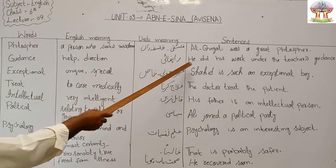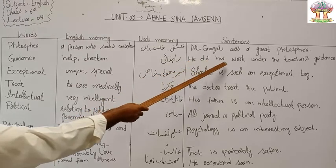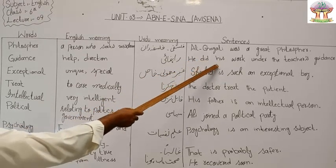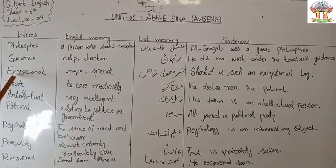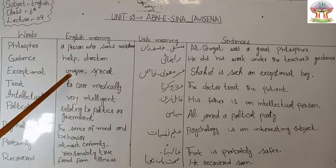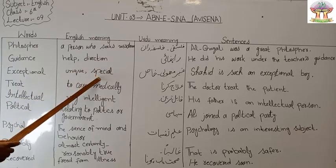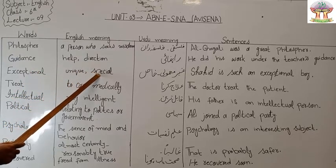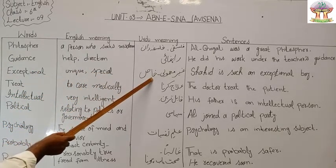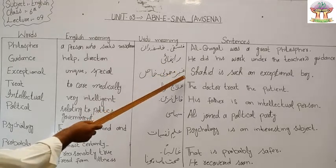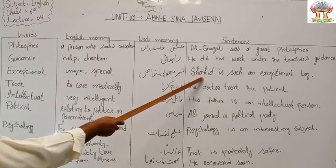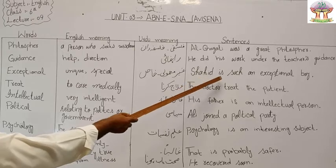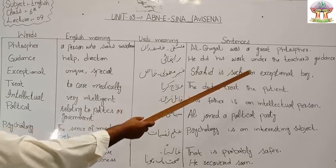He did his work under the teacher's guidance. The next word is 'exceptional.' English meaning: unique, special. Urdu meaning: ghair maamuli ya khas. Sentence: Shahid is such an exceptional boy.